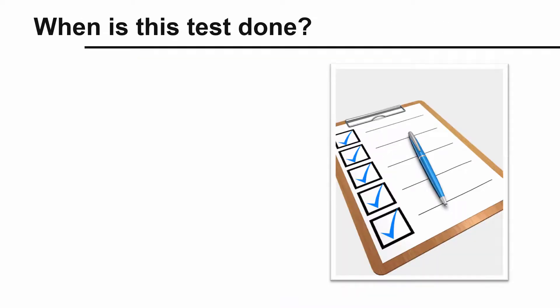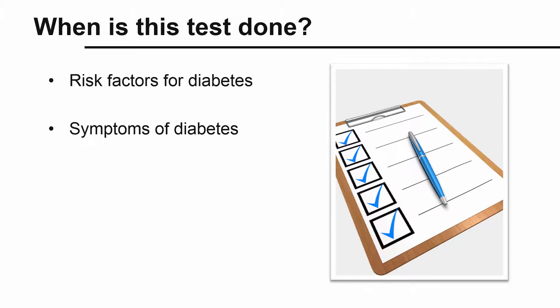This test is usually completed when an individual has risk factors for diabetes. These risk factors include increasing age, family history of diabetes, being overweight, having an unhealthy diet, high blood pressure, and high lipid levels, or when symptoms of diabetes are shown, such as increased thirst, frequent urination, hunger, and fatigue.